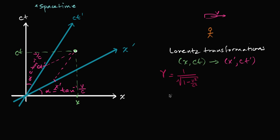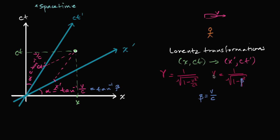Sometimes you might see it written as gamma equals one over the square root of one minus beta squared. Beta is another variable that shows up a lot when thinking about special relativity. Beta is just the ratio between the relative velocity — her relative velocity in my frame of reference — and the speed of light. Even this angle alpha could be written as the inverse tangent of beta. This also makes the Lorentz factor a little simpler to write.